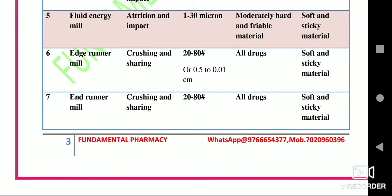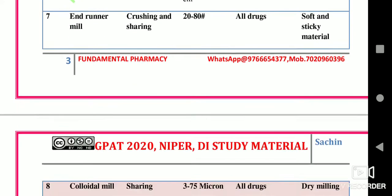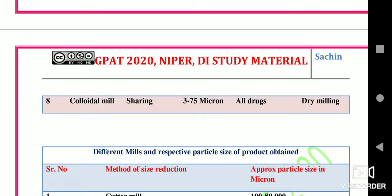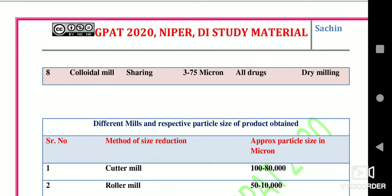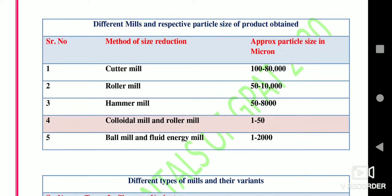The edge runner mill works on the principle of crushing and shearing; particle size obtained is 20 to 80 mesh; used for all types of drugs; cannot be used for soft and sticky material. The colloidal mill works on the principle of shearing; particle size obtained is 3 to 75 microns; used for almost all types of drugs; not used for dry milling. The lowest particle size is obtained in the colloidal mill.